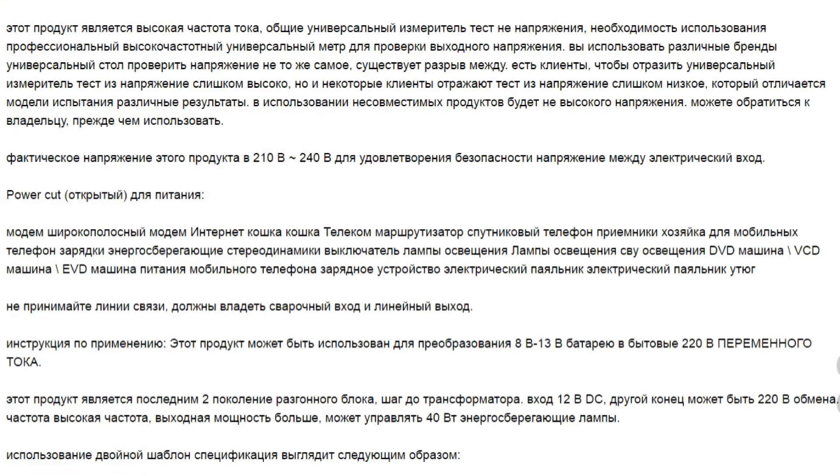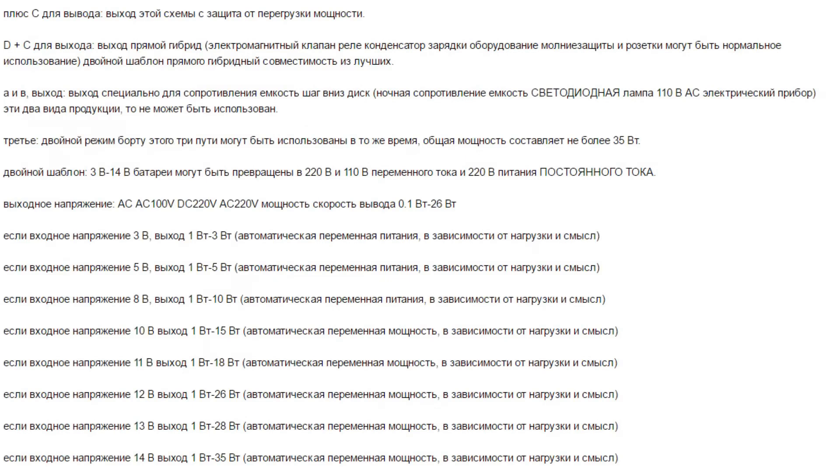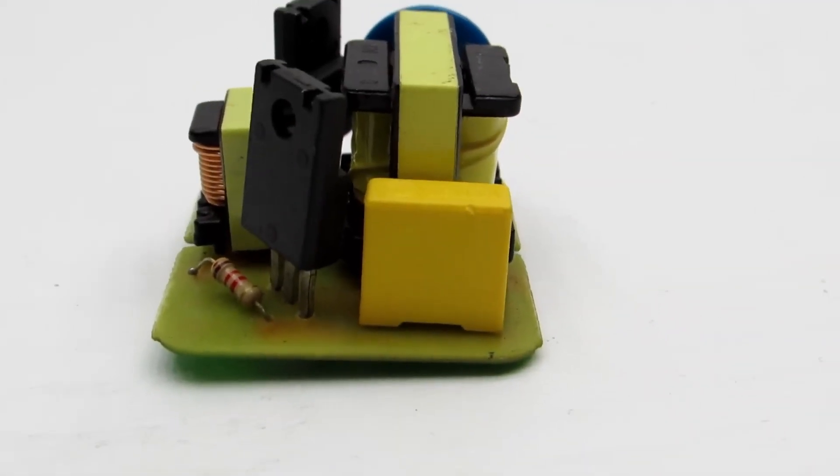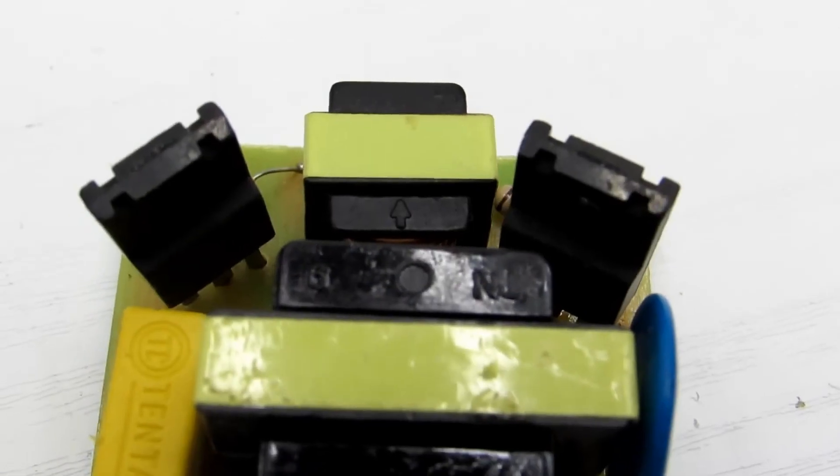If we believe the sellers, this is supposed to be a super cool and super new converter made with foreign technology, and much more. The manufacturer even took the trouble to write what output power can be obtained at a certain input voltage. So, we know that this is a voltage converter from 12 to 220 volts, and it's of the CAC type.